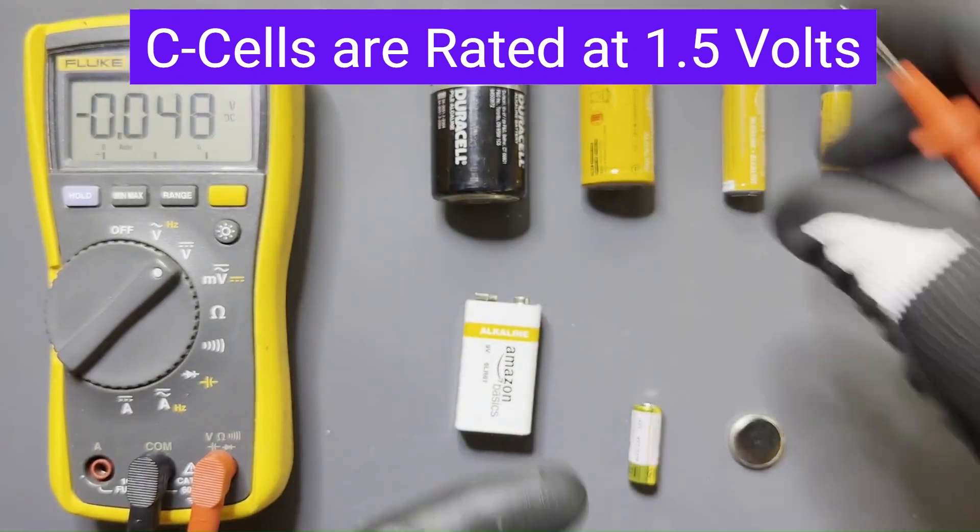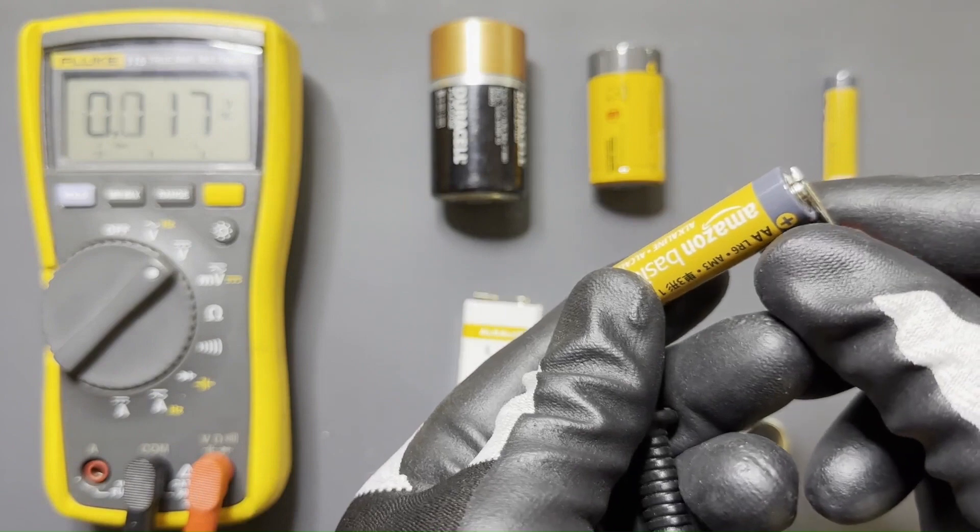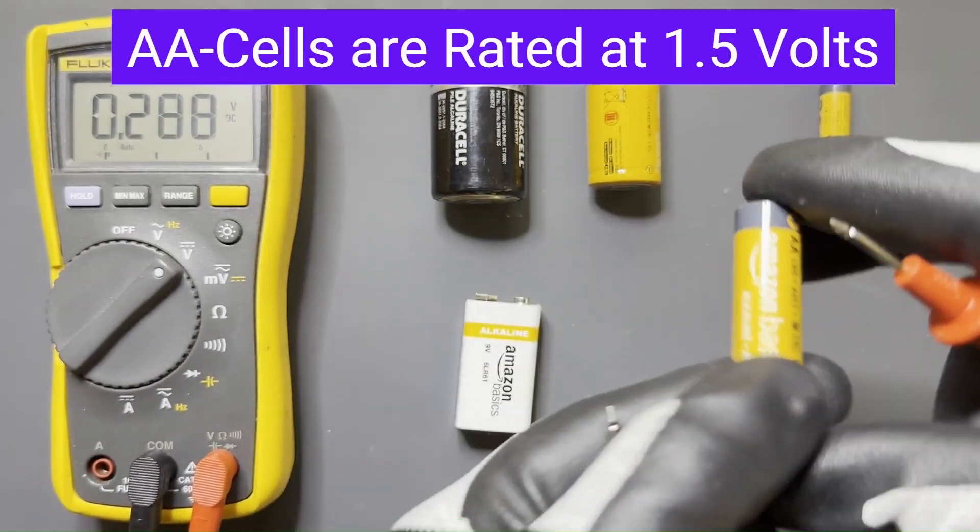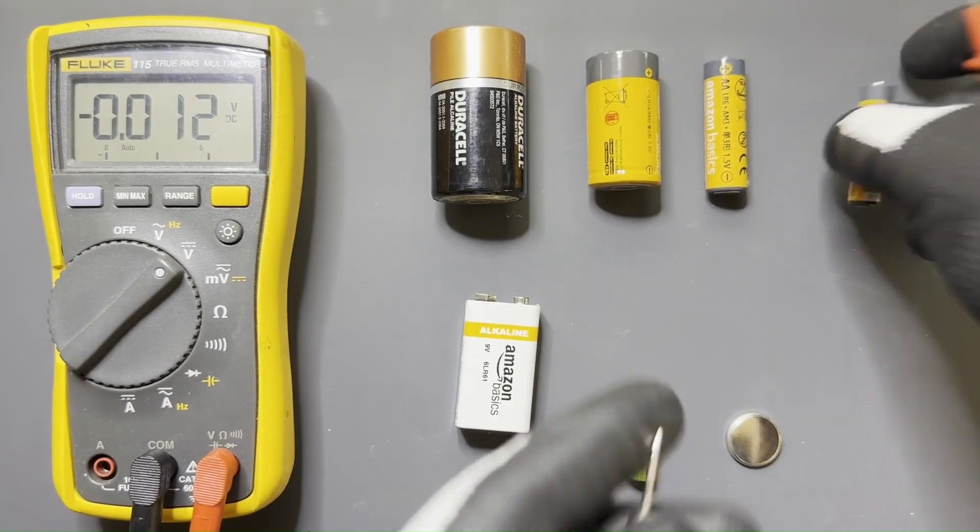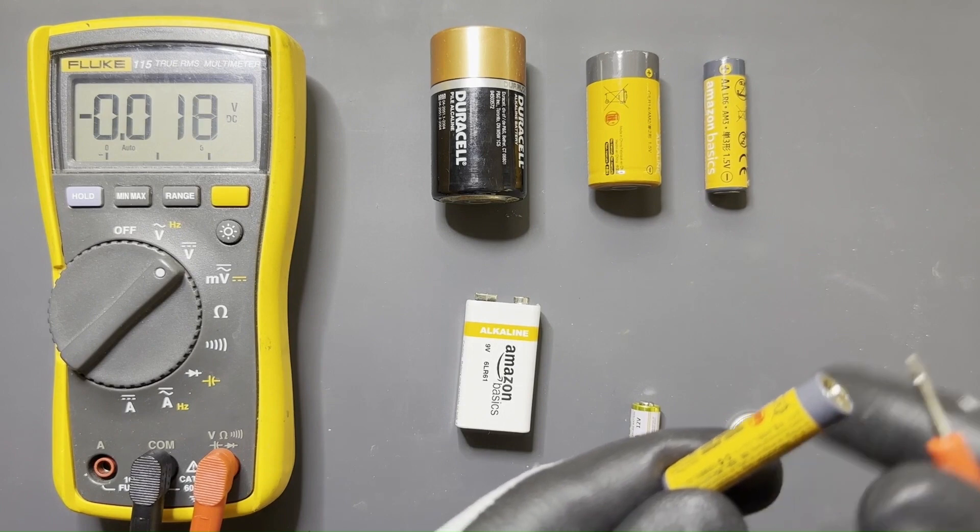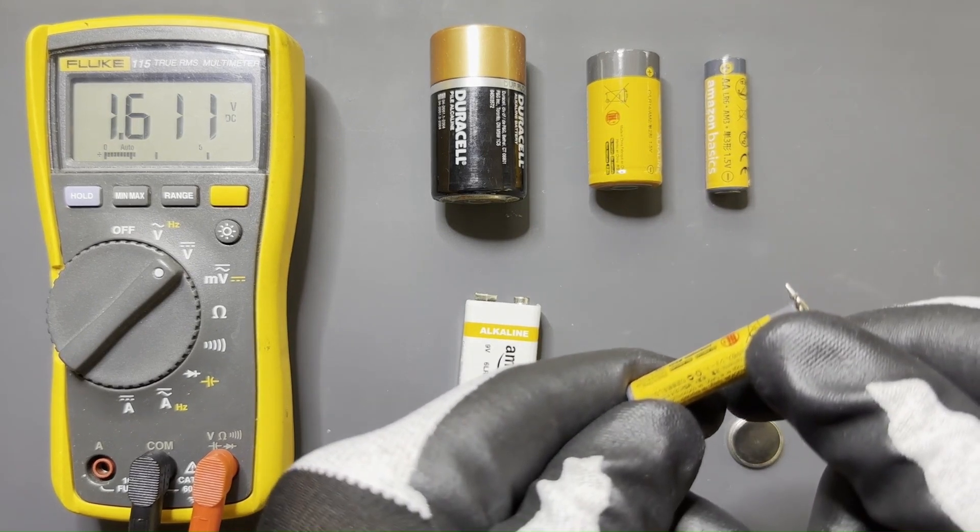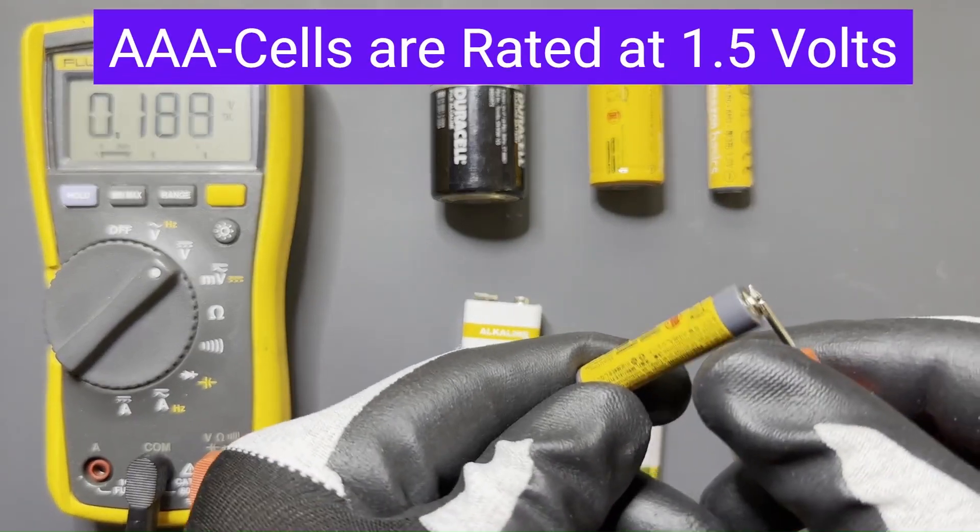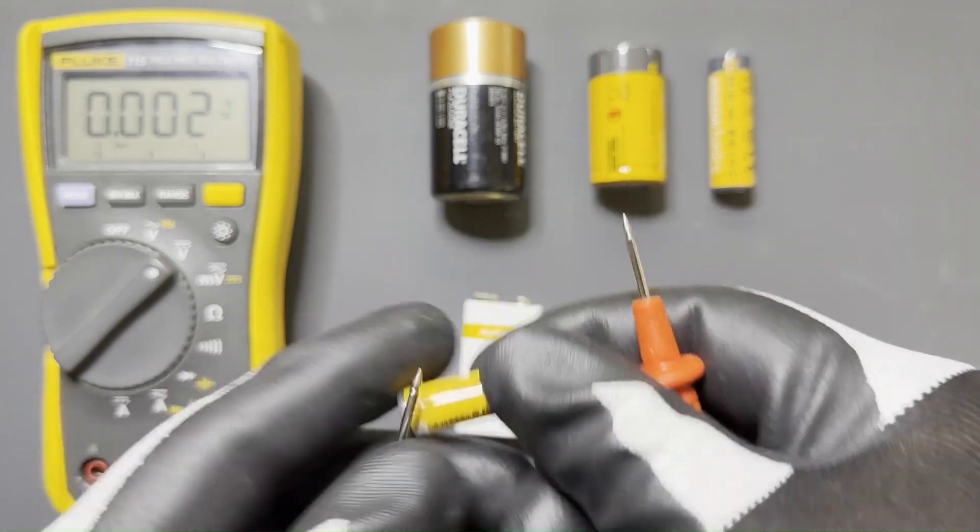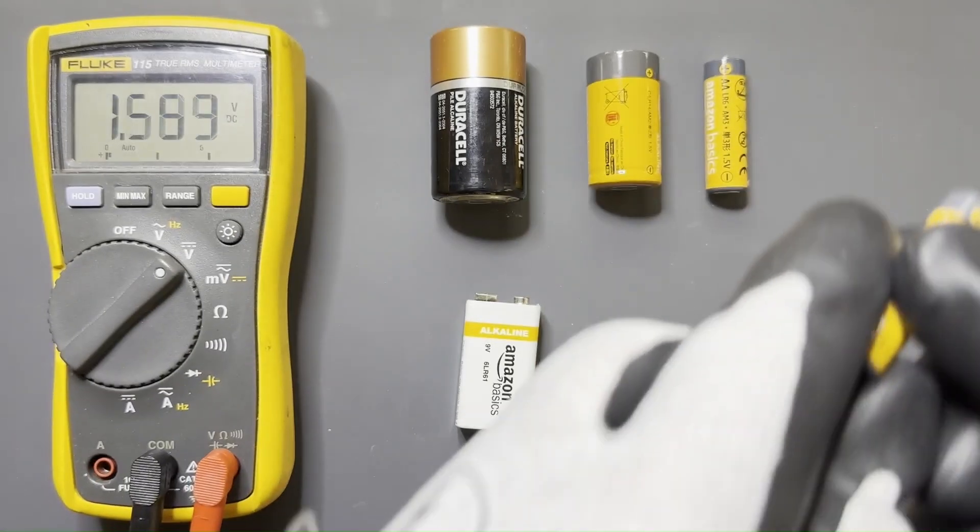This is a AAA. Again, the pointed side is positive, is the red lead. 1.624, that's good. I would trust that battery to last for a while. These are all alkaline cells by the way, which is what you're most commonly going to find. This AAA cell here, same thing - the positive lead and the negative black lead is going to go on the flat side there. We're reading 1.6-something, so that's a fresh battery as well.